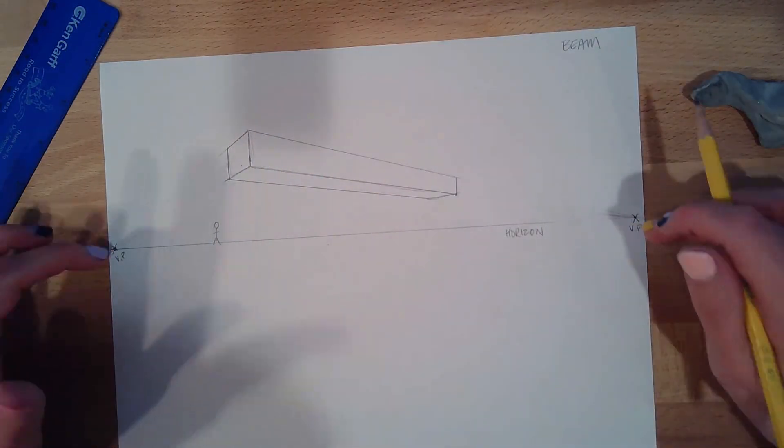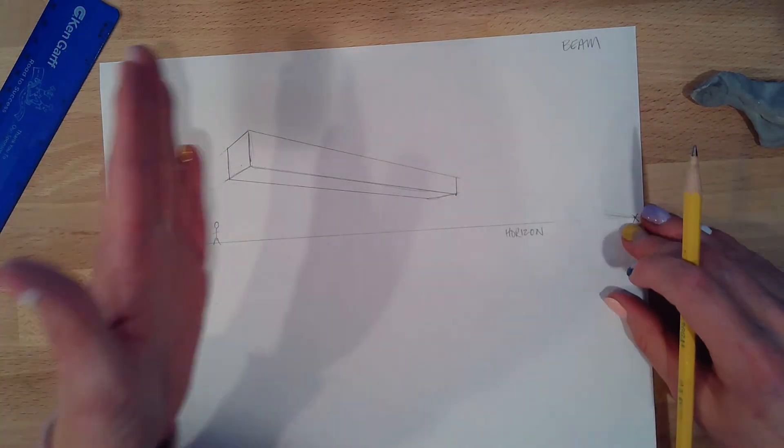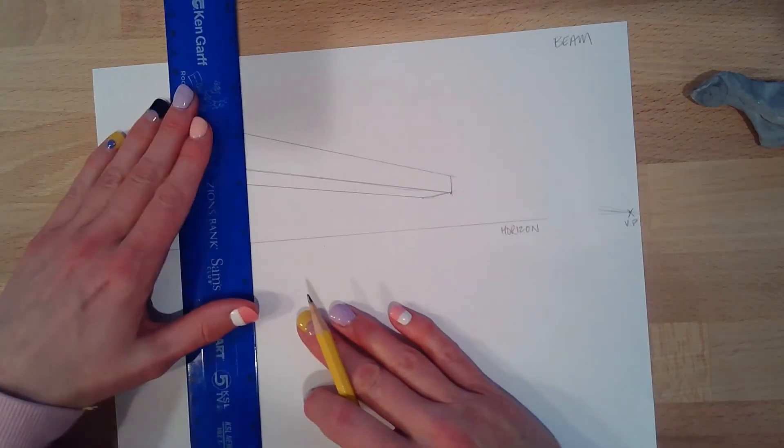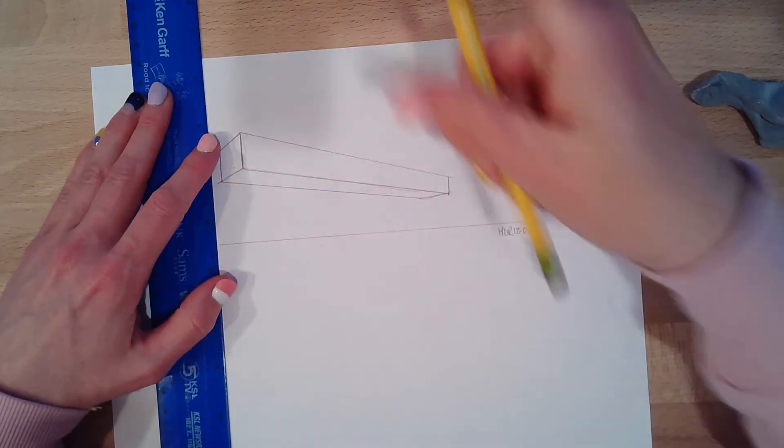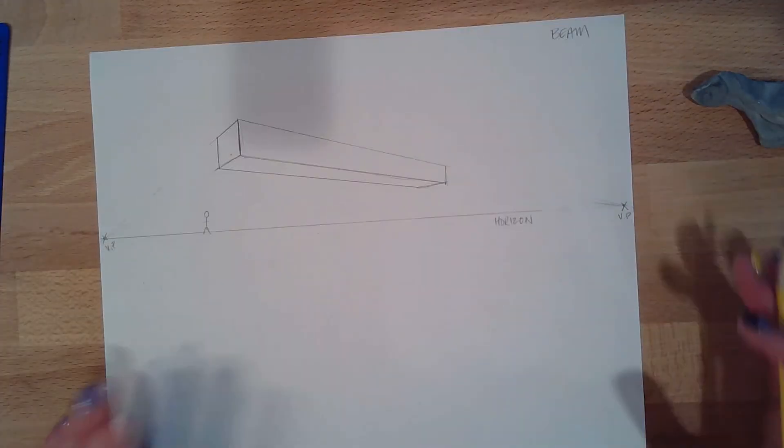Now you should always be either using your vanishing points or the ruler when you're going vertical. You should never just freehand an angle. When you freehand an angle, then you get all skewampus. That's how you do a beam.